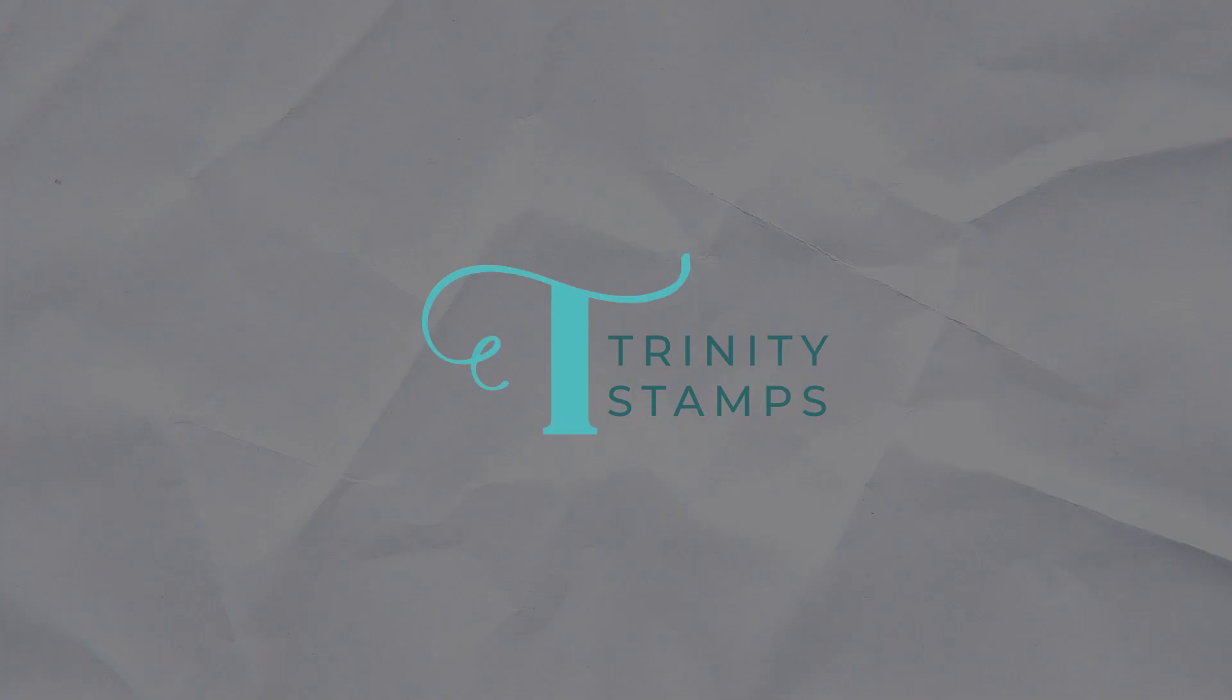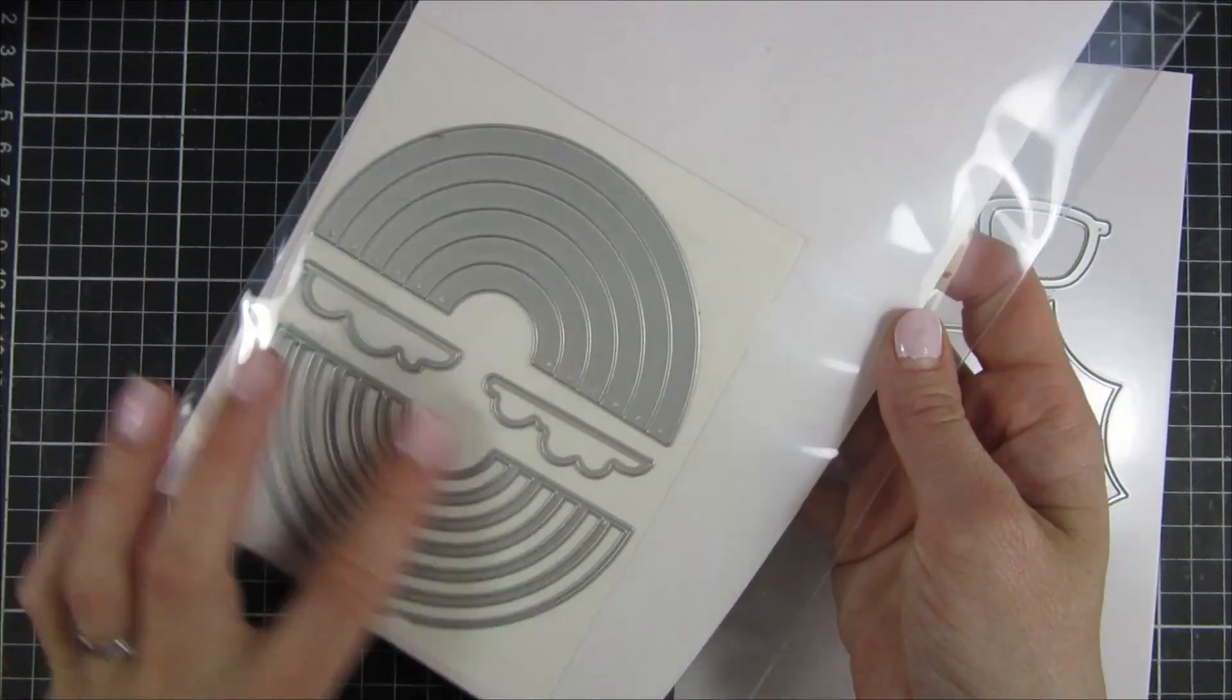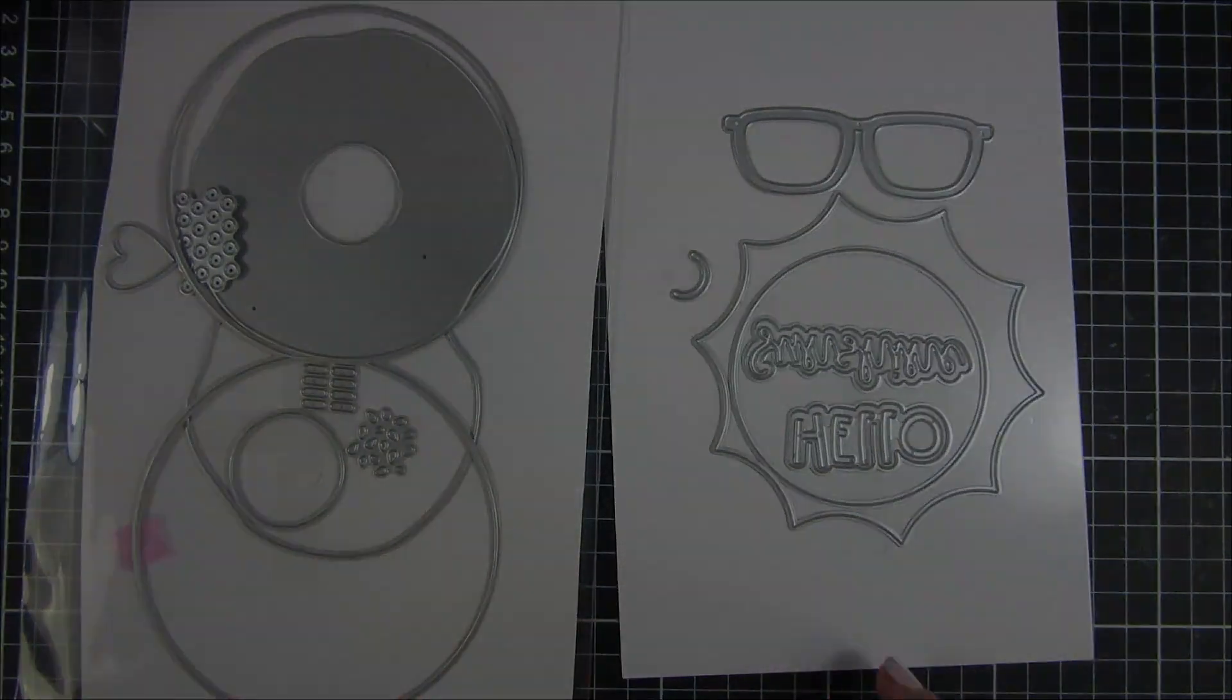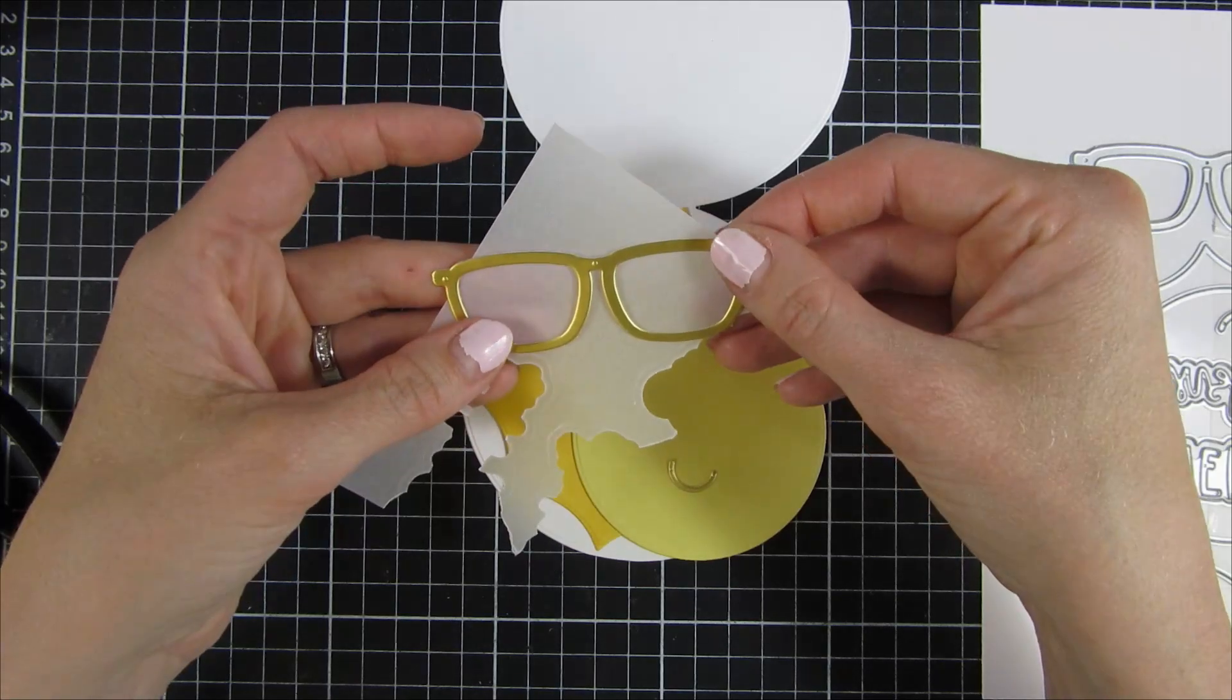Hi everyone, welcome back. My name is Emily and in this video I will be creating two cards. I will be focusing on an older die set called Circle Shape Card.